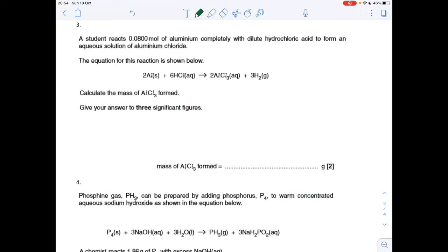So the next question is a reactant mass question. We've got to calculate the mass of aluminium chloride that's formed from this reaction from 0.08 moles of aluminium. The mole ratio between the aluminium and the aluminium chloride is just 1 to 1, so it's going to produce 0.08 moles of AlCl3.